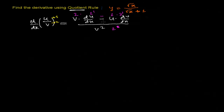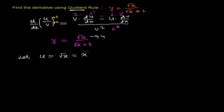Our question is y equals root x over root x plus 1. So I'm supposing u equals root x, which is x to the power 1 by 2, and let v equal root x plus 1, which is actually x to the power 1 by 2 plus 1.